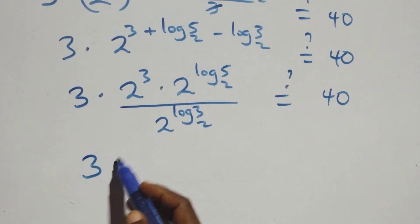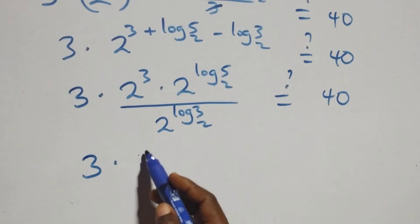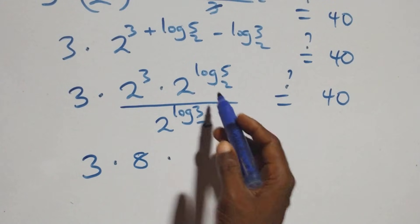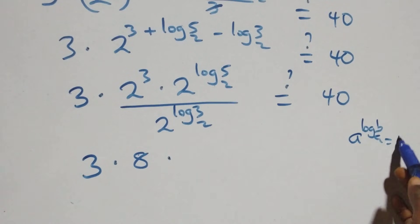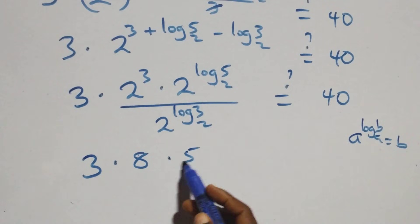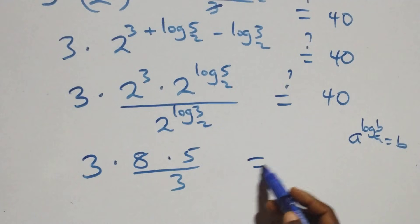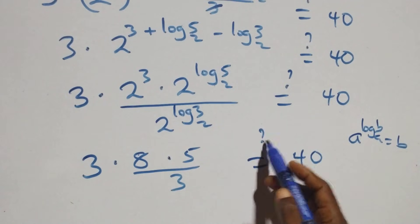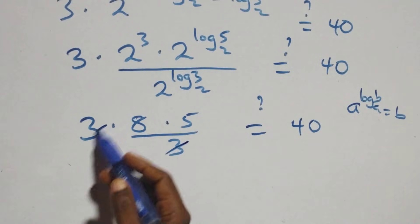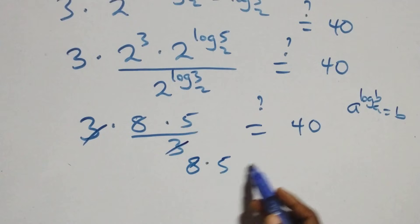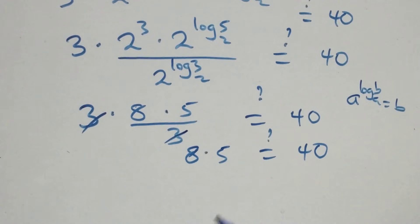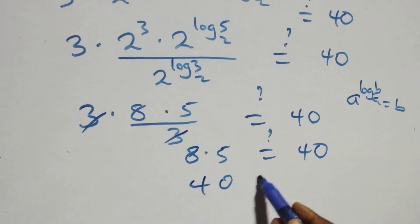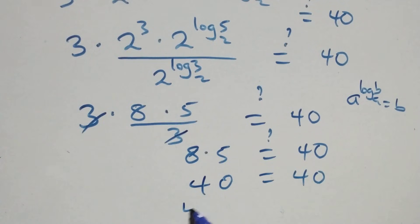We evaluate: 2^3 equals 8, 2^(log₂(5)) equals 5, and 2^(log₂(3)) equals 3. So we have 3 times 8 times 5 over 3. The 3's cancel, leaving 8 times 5 equals 40, which indeed equals 40. Left hand side equals right hand side — verified!